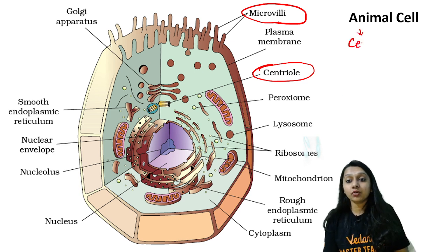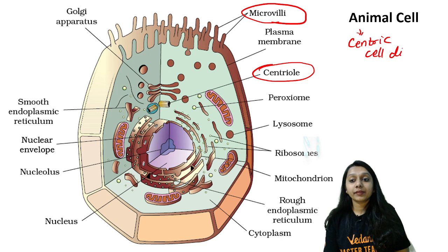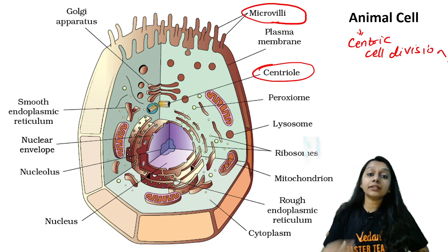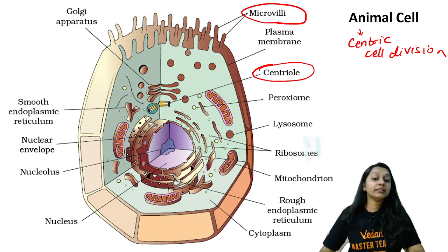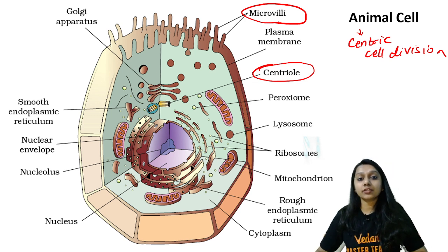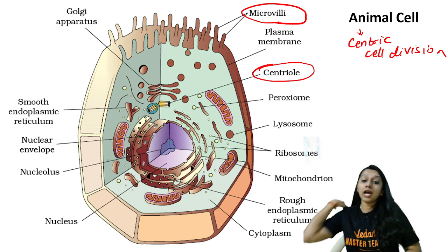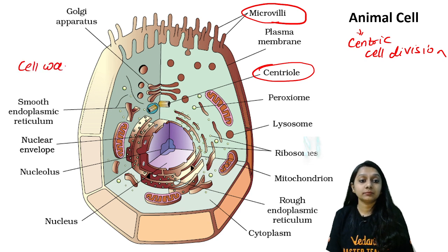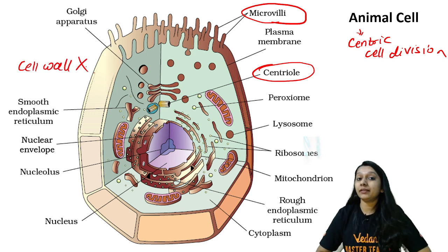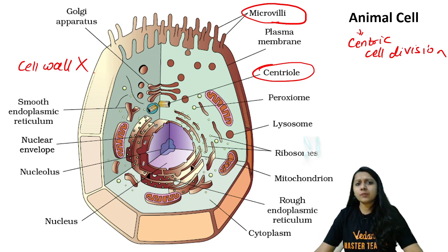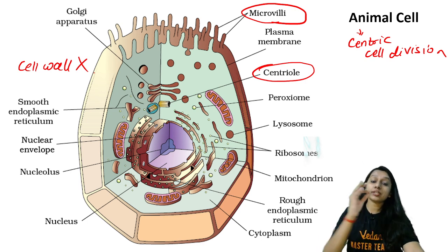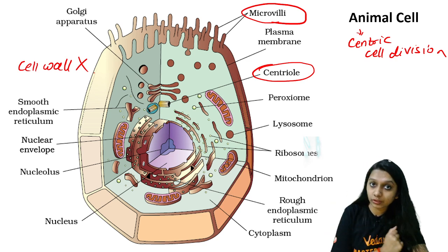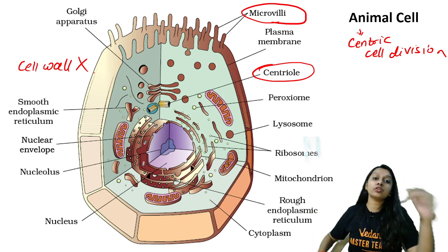Animal cells are acentric for cell division because here there is a centriole, and plant cells have no centriole. So we have said that plant and animal cells were mostly the same, but two different things are microvilli and centriole. And one more thing: in animal cells there is no cell wall. There is no cell wall and no middle lamella in animal cells. Instead of plasmodesmata, animal cells have gap junctions, adherence junctions, etc.